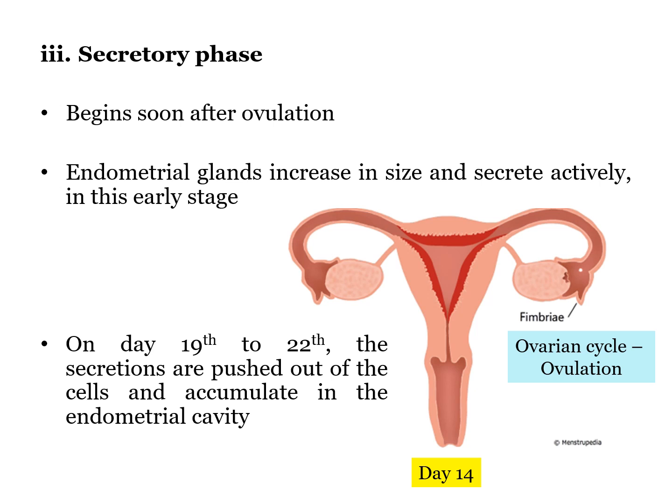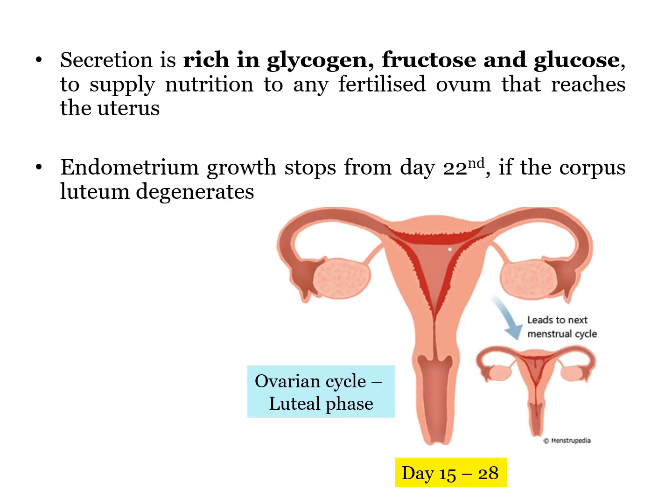On day 14, the endometrium lining is thick and the endometrial glands have also increased in size. These glands begin to push out their secretions, which accumulate in the endometrial cavity — this is the secretory phase. Ovulation in the ovary may also happen at any time now. Endometrium secretions are rich in glycogen, fructose, and glucose, ready to supply nutrition to any fertilized ovum that reaches the uterus. However, there is no further growth of the endometrium starting on day 22 if the corpus luteum in the ovary degenerates.